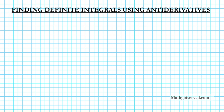Good day students! In this clip we're going to be going over some examples on how to find definite integrals using antiderivatives. Before we get started with the examples, let's take a look at the formula we're going to be using. We're going to be using FTC part 2, the fundamental theorem of calculus part 2.